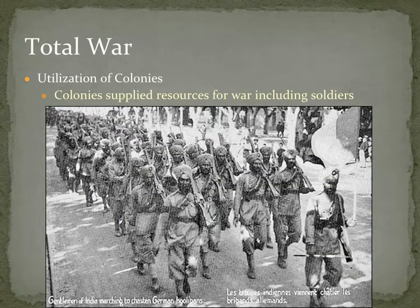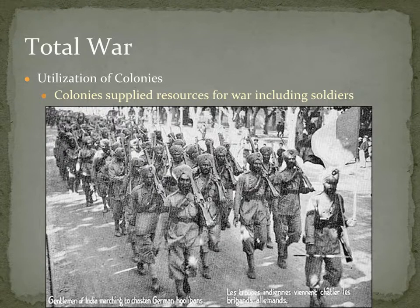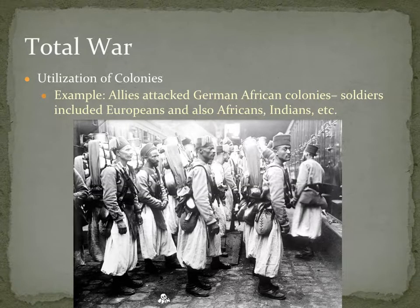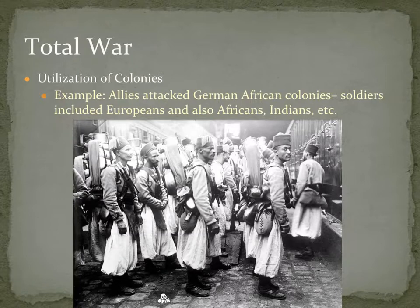Another part of total war is the utilization of colonies. We talked at the beginning about how imperialism played a role in World War I. Colonies were very important to the European powers for supplying resources, including soldiers. Here we have Indian soldiers marching off as part of the British military to fight in World War I. The war was also fought on other fronts, and Europeans often attacked each other's colonies — for example, the Allies attacked German-African colonies. The soldiers who fought included Europeans, but also Africans and Indians.